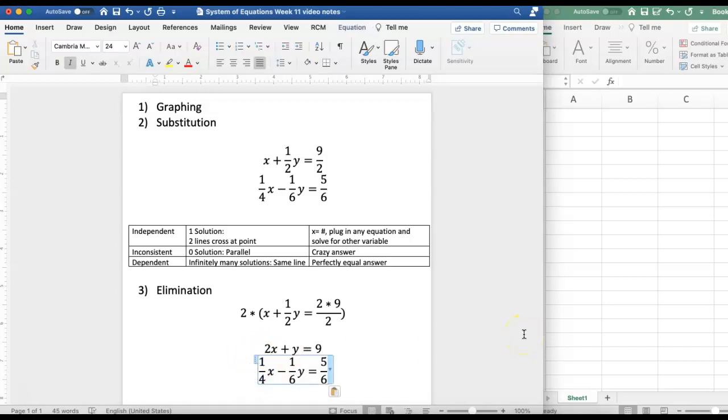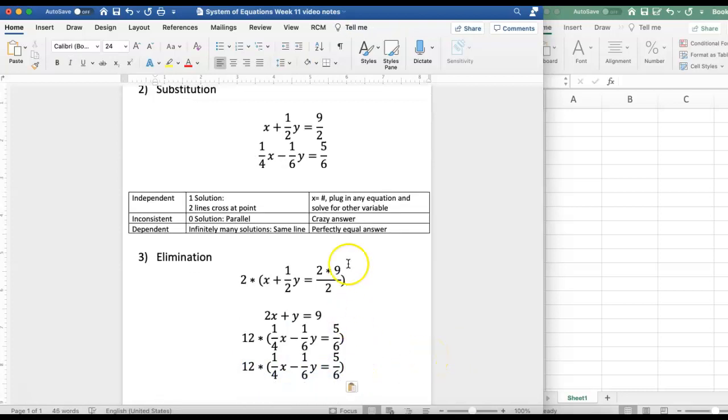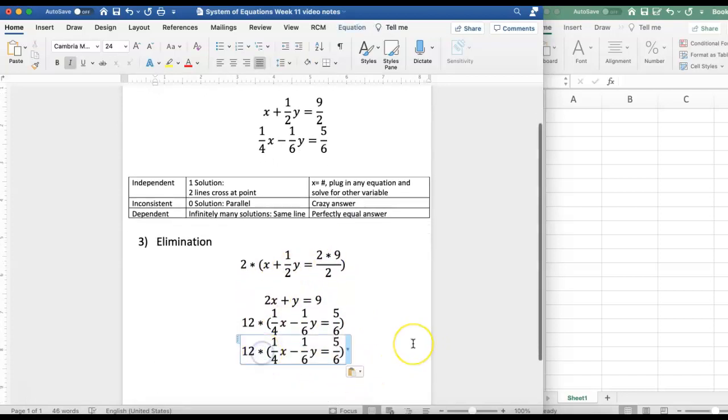So I'm going to do 12 times everything here and when I do that again I'm still going to get rid of all of the denominators and in this one I'm going to show it instead of just talking about it like I did in this one because I have more.